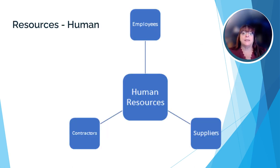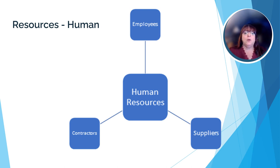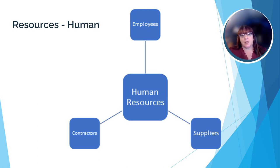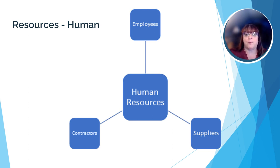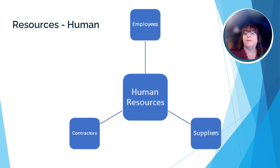Now that we've looked at the scheduling part of the project plan, let's take a look at resources. There are two types of resources a project could use: human and physical. Human resources are the human beings or people that are needed to complete the project — anyone who has the necessary skills to complete the project. They could be employees of the company, contractors the company hires to perform some or all of the tasks, or suppliers who make sure the physical resources are there when the project team needs them.